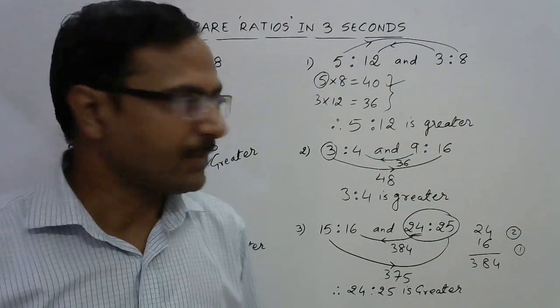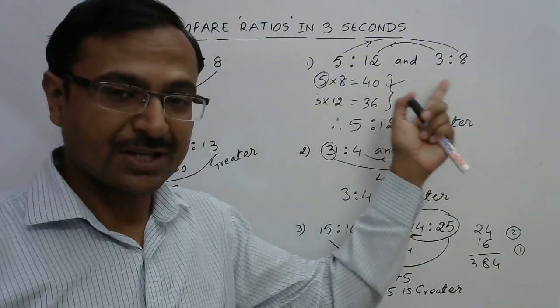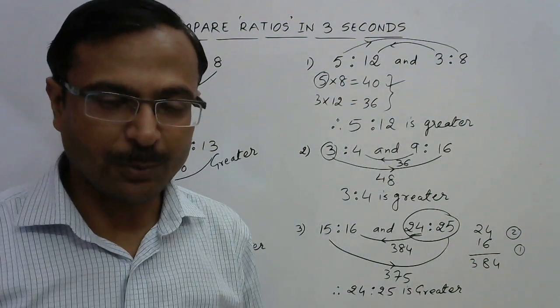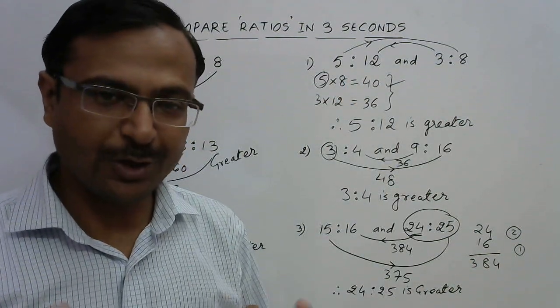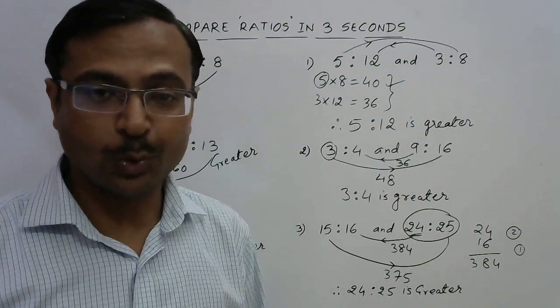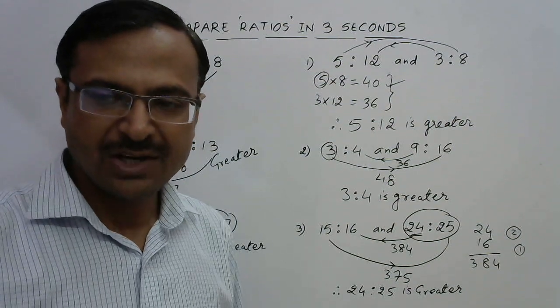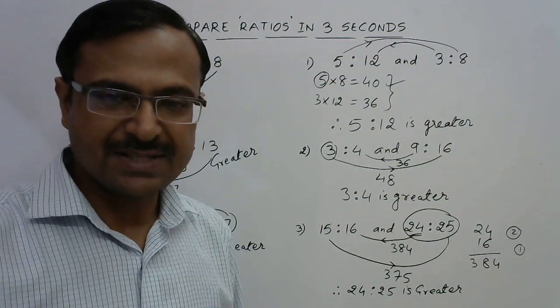You can see the speed of calculation increases many fold if you have such shortcuts up your sleeves. But if you start converting them into rational numbers and then taking the LCM of denominators and converting them into a common denominator, then obviously it is going to consume 3 to 4 times more time than this method. So learn these methods for success in competitions. Do share and subscribe the channel if you like the videos.